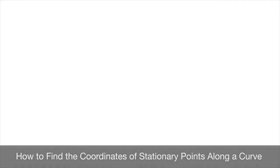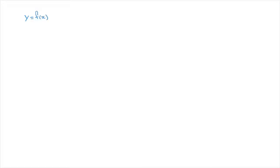In this video, we learn how to calculate the coordinates of stationary points along a curve's length. Given some curve with an equation y equals f of x, a stationary point is any point along its length at which the derivative function is equal to zero.